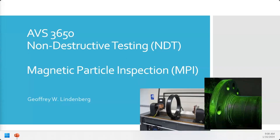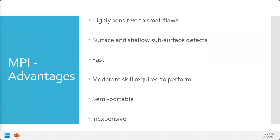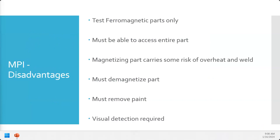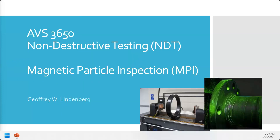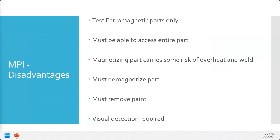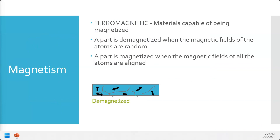We started MPI by talking about the advantages and the disadvantages, and we'll look at that for each of our different methods. MPI stands for magnetic particle inspection. We've got a few background areas to look at before we get too far into it. The first is magnetism.